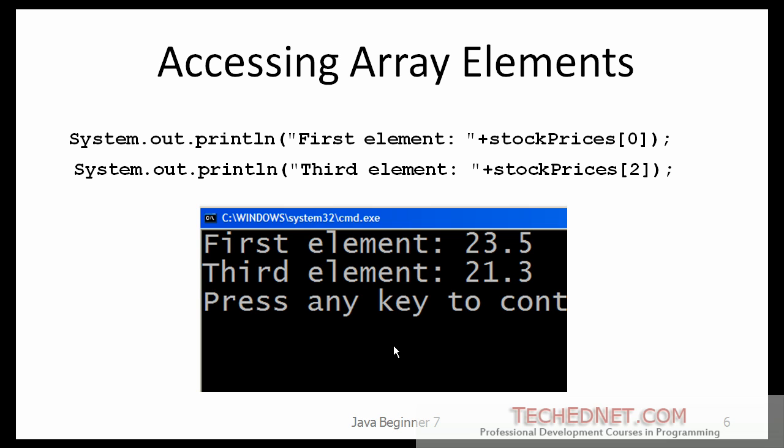Here we are accessing the first and the third elements of the array. This is the first element, this is the third element. Keep in mind that the first element always has an index of 0, and the last element has an index of size minus 1 — in this case 3, because we have four elements.